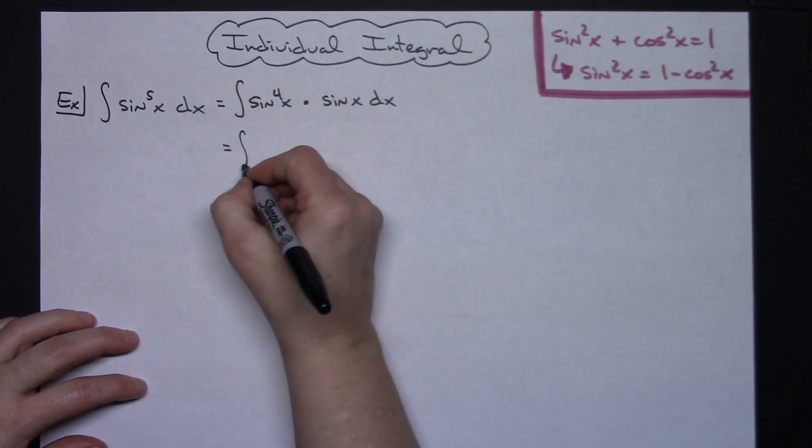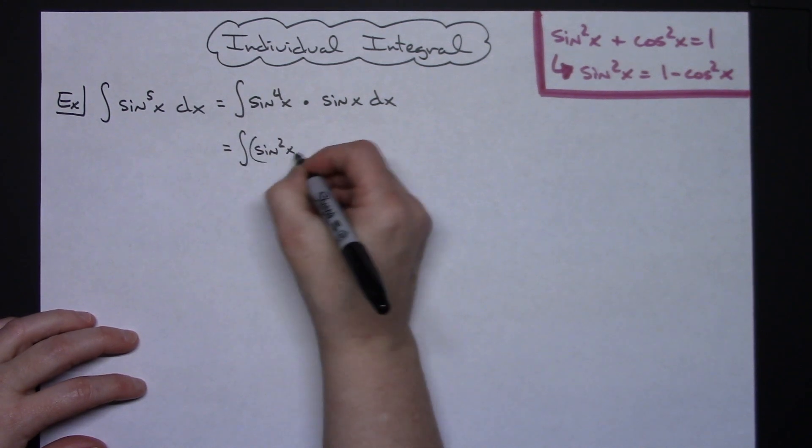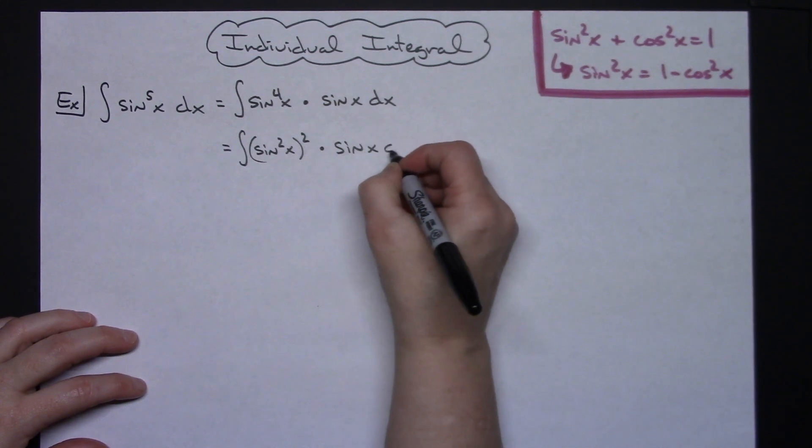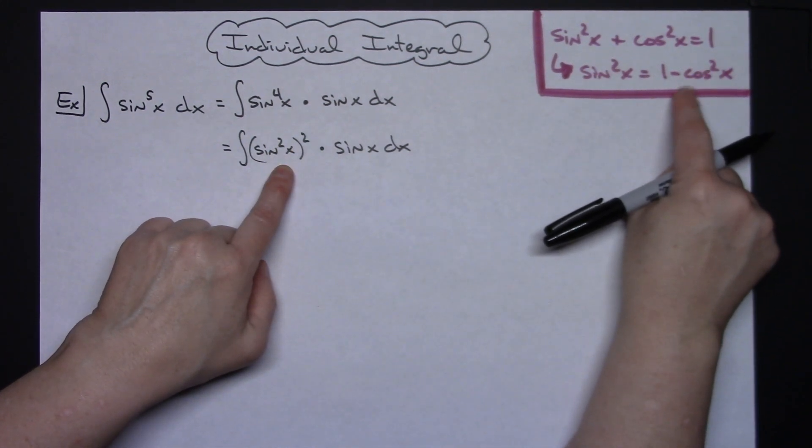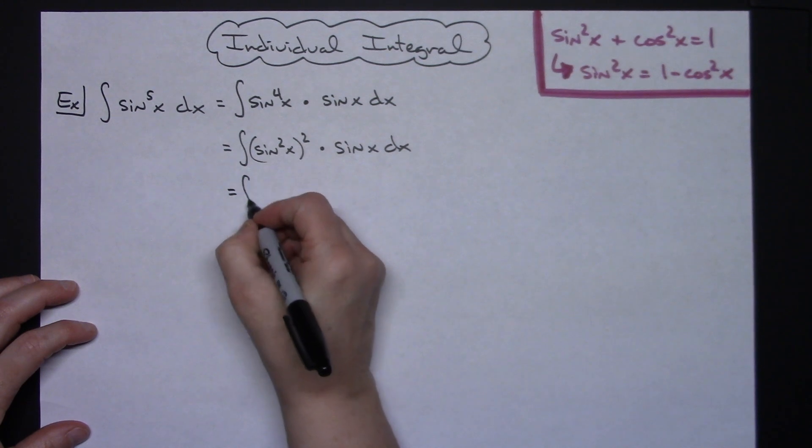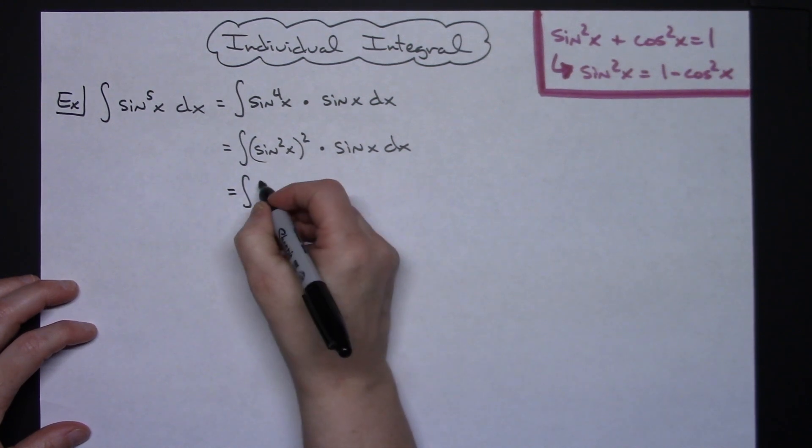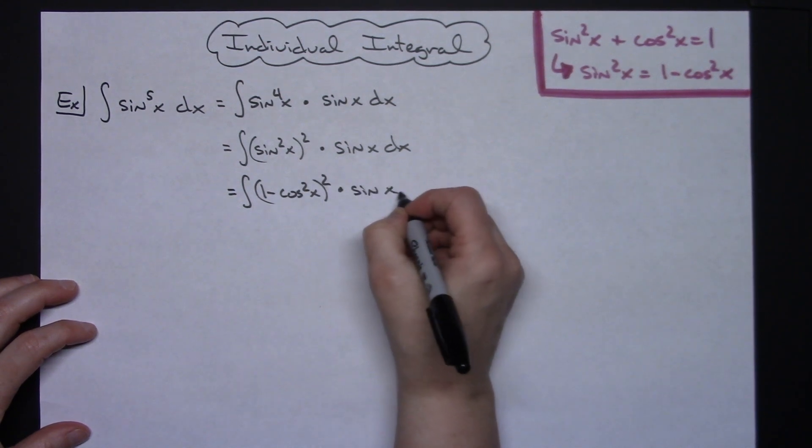So then I'm going to have sine squared x squared and that's going to allow me to do the substitution of one minus cosine squared x for this right here. So we're going to do that substitution. We'll have one minus cosine squared x quantity squared times the sine x dx.